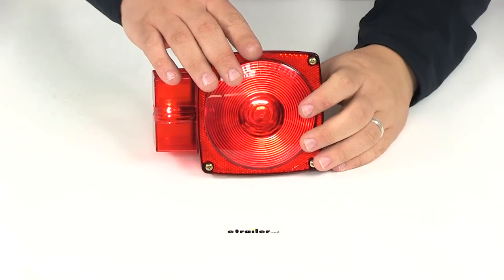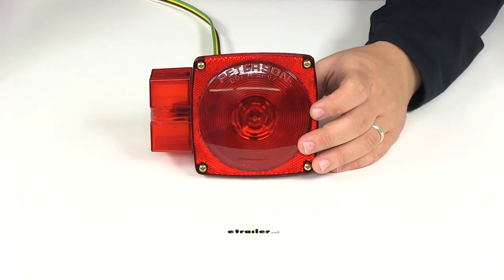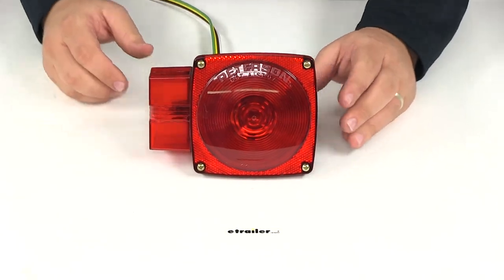That's going to do it for today's review of part number PM444L. This is the Peterson trailer light for the left hand side of your trailer.